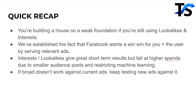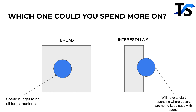Quick recap: you're building a house on a weak foundation if you're still using lookalikes and interests. We established that Facebook wants a win-win — serving relevant ads to users while helping you spend more money on the platform. Interest and lookalike audiences give great short-term results but fail at higher spend due to smaller audience pools and restricted machine learning. Which one do you think you can spend more on at scale? A broad audience might convert at 2x ROAS consistently from $100 a day up to $10,000 per day. A small interest might convert at 5x ROAS at $100 a day, drop to 3x at $500 a day, and 2x at $1,000 a day.